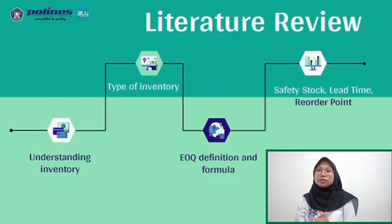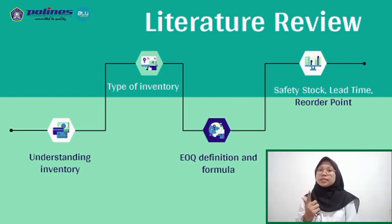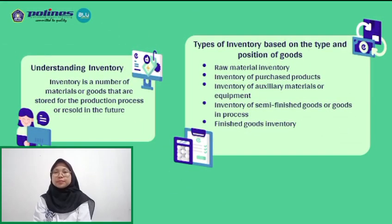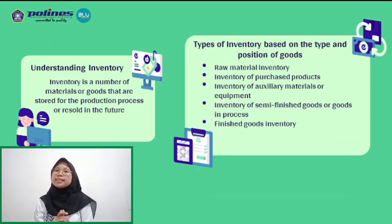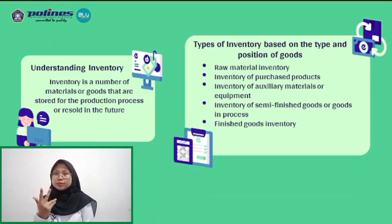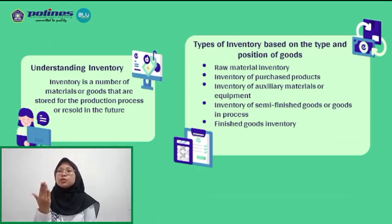The next topic is a literature review, which will discuss: 1. Understanding inventory, 2. Types of inventory, 3. EOQ definition and formula, 4. Safety stock, lead time, and reorder point. Inventory is a number of materials or goods that are stored for the production process or for future use. Types of inventory based on the type and portion of goods are: raw material inventory, inventory of processed products, inventory of auxiliary materials or equipment, inventory of semi-finished goods or goods in process, and finished goods inventory.